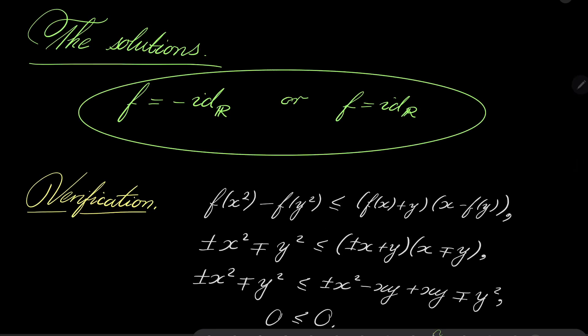All in all, we have two distinct solutions: either the negative identity or the identity of the real numbers. Thank you very much for watching. I hope that you've learned something new this time and I will see you next time. Goodbye.